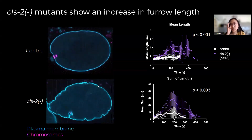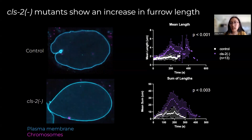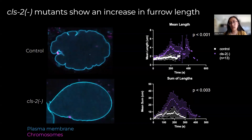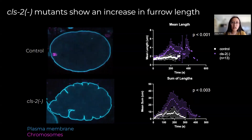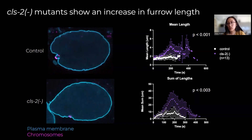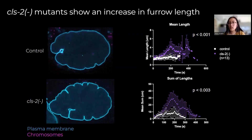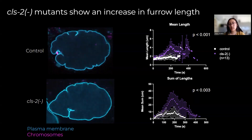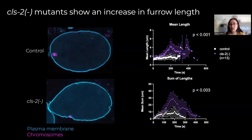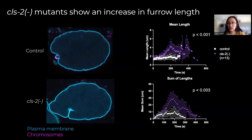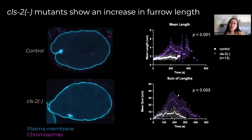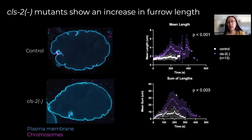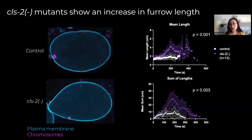We quantify data in two different ways. First, by taking the mean furrow length in microns over time and seconds after anaphase onset — anaphase is when this furrowing occurs. The control is shown in white here and the CLS2 mutant is shown in purple, and as you can see, there's a pretty significant difference in furrow length, with the mutants exhibiting a significant increase. We also look at the sum of the furrow lengths over time and seconds after anaphase onset, and similarly we see an increase in furrow length there.